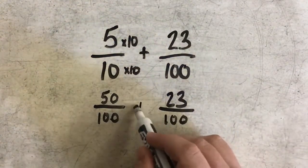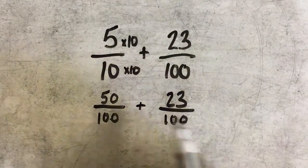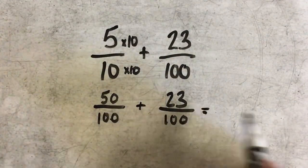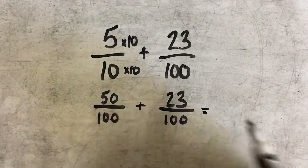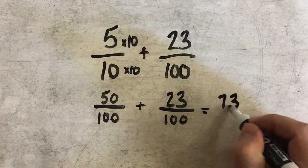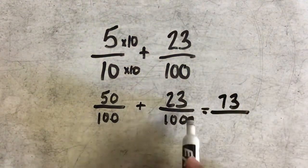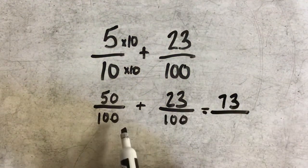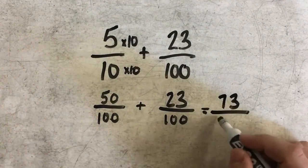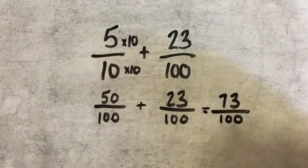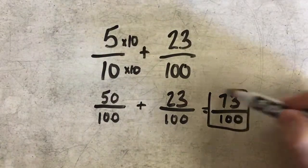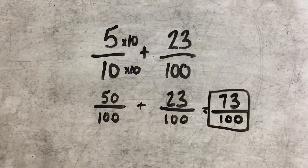Now, since I have common denominators, I can continue to add my original problem. I would do that by adding 50 and 23, my numerators, which gives me 73. And when I add fractions, remember I do not add my denominators together — they simply stay the same as my answer. So my answer for this problem would be 73 hundredths.